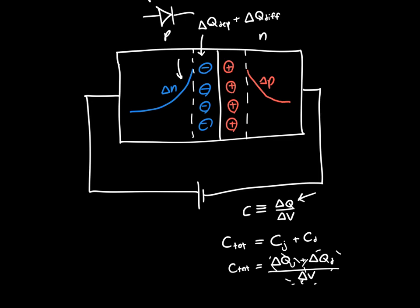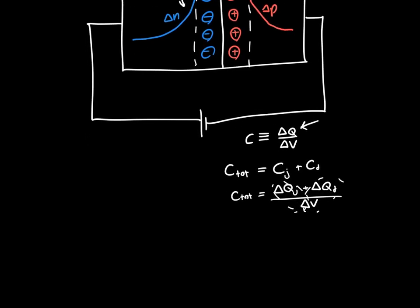And this is equivalent in a circuit model to, if we say that this is one side of the diode, so let's say that this is the positive side of the, the P-side of the diode, this is the N-side of the diode,